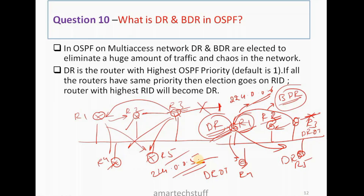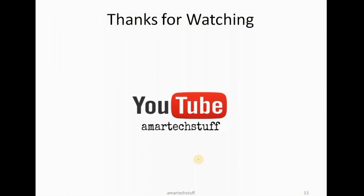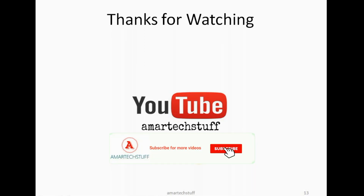In this way, updates are not repeated, no huge amount of traffic is created, and no chaos occurs in the multi-access network. This is how OSPF behaves differently on multi-access networks by electing DR and BDR. This is a very important question asked in almost every OSPF interview. I hope you liked this video — please share, comment, and subscribe to my channel Amar Tech Stuff. Thank you for watching, have a nice day and best of luck for your interviews.